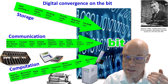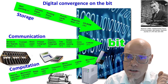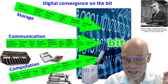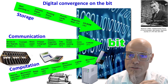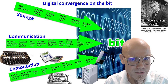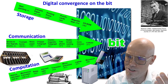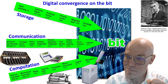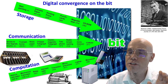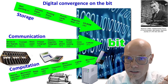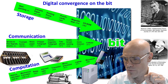So: computation, communication, storage. Communication is the transmission of information through space. Storage is the transmission of information through time. And since Einstein, we know space and time are related — some physicists just interchange them — so the engineering aspect has some similarities. Computation is the transformation of information in space and time — the Turing machine.